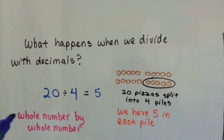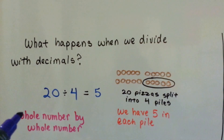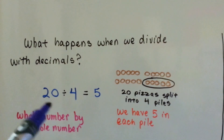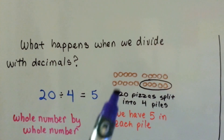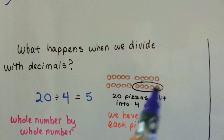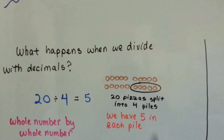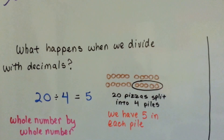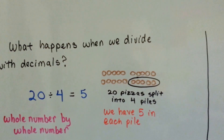Here's a whole number divided by a whole number. 20 divided by 4 is 5. We have 20 pizzas, we split them into 4 piles, and there's 5 in each pile. That's pretty straightforward and simple, right?